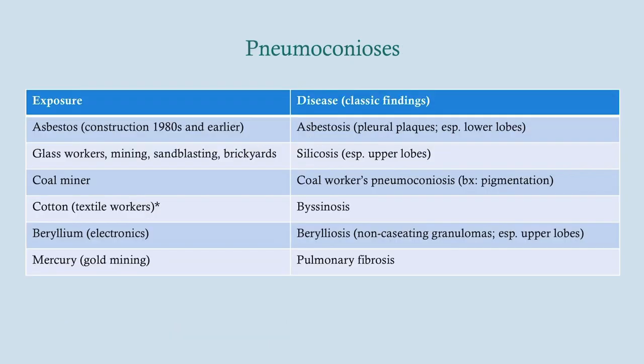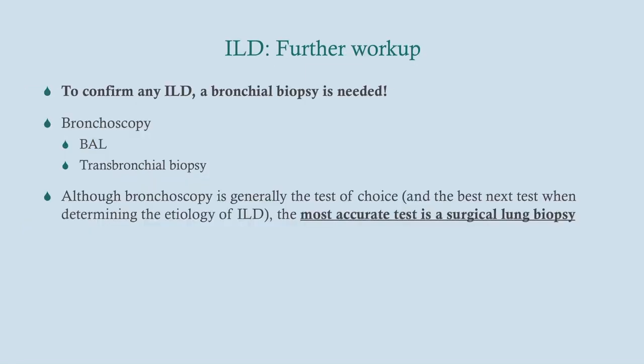The different pneumoconioses are more Step 1 material but are included here for completion. For further workup, once you know a patient has interstitial lung disease, you want to get a bronchial biopsy. The best next step is bronchoscopy with biopsy — including bronchoalveolar lavage, though that's not necessarily always useful. The most accurate test, however, is a surgical open lung biopsy. The biopsy is what gives you the definitive diagnosis.